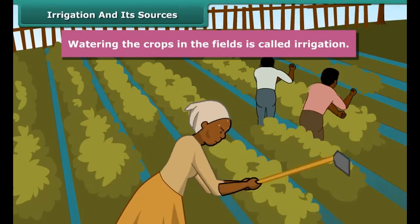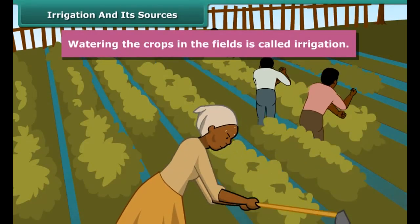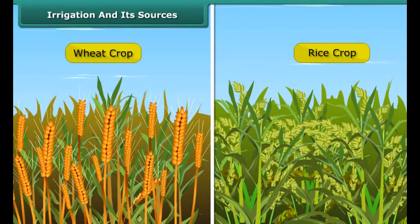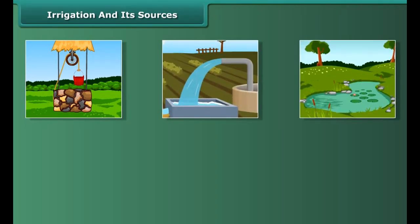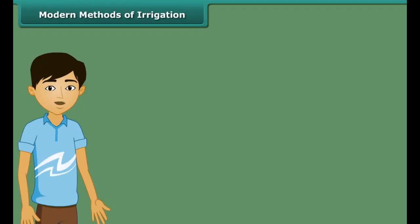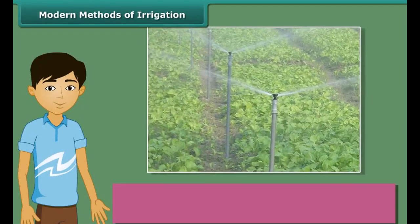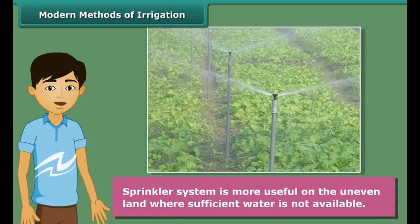Water is essential for crops because germination of seeds cannot take place under dry conditions. Water is absorbed by the plant roots, and along with it, minerals and fertilizers are also absorbed. Watering the crops in the fields is called irrigation. The time and frequency of irrigation varies from soil to soil, crop to crop, and season to season. Wells, tube wells, ponds, lakes, rivers, dams, and canals are the main sources of irrigation.